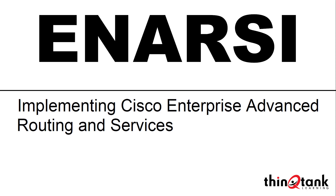Some additional topics we may cover as the course concludes include multi-protocol label switching, layer 3 VPN architecture, layer 3 VPN routing, IPv6 first hop security, troubleshooting with DNA Center and DNA Center Assurance, and additional troubleshooting topics on EIGRP, OSPF, BGP redistribution, control plane policing, and infrastructure security and services.